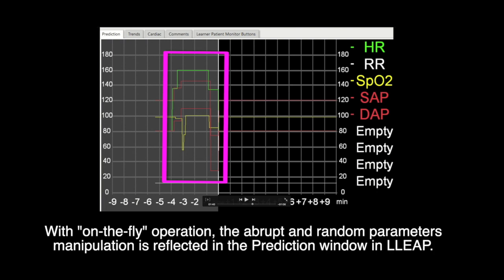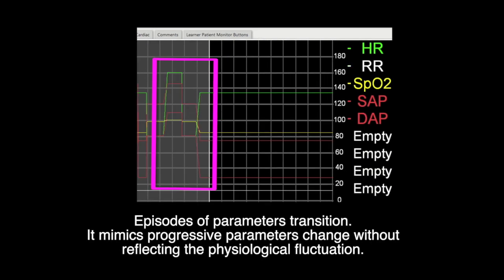With on-the-fly operations, the abrupt and random parameter manipulation is reflected in the predictions window in LLEAP. To overcome the weakness of on-the-fly operations, some programmed scenarios use parameter transitions to mimic the progressive hemodynamic changes without reflecting the physiological fluctuation.